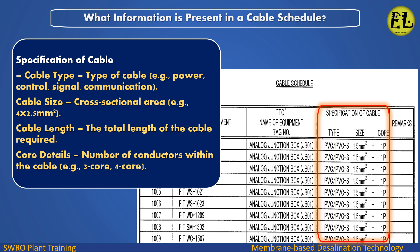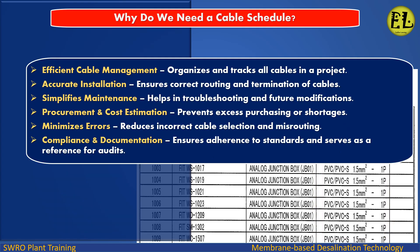Cable size: the cross-sectional area, for example 4x2.5 mm². Cable length: the total length of the cable required. Core details: the number of conductors within the cable, for example 3-core or 4-core.